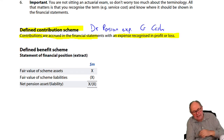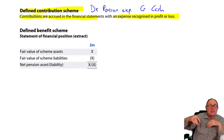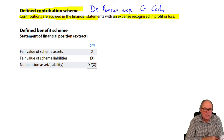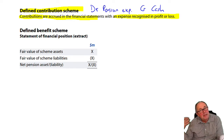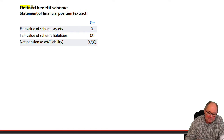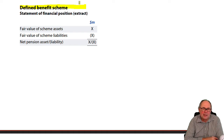The one that's exciting is defined benefit. There was a time when they used to account for it like defined contribution, but the problem was that the profit and loss was all over the place — in good years high profits, in bad years a massive expense for pensions. And in the meantime the staff are doing the same amount of work each year. The current standard is about the fourth attempt, and it seems to work quite well. You won't really be doing much calculation because the calculation is done by an actuary — they come up with the numbers and you just have to put them in the right place.